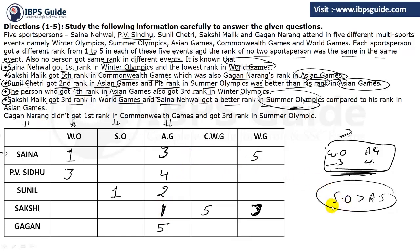Sania got a better rank in Summer Olympics than Asian Games — she got rank 3 in Asian Games and rank 2 in Summer Olympics, since rank 1 is already in Winter Olympics. For Sania Nehwal, ranks 1, 2, and 3 are now done, so she must get rank 4 in Commonwealth Games. Now for the last piece of information: we will then solve further.